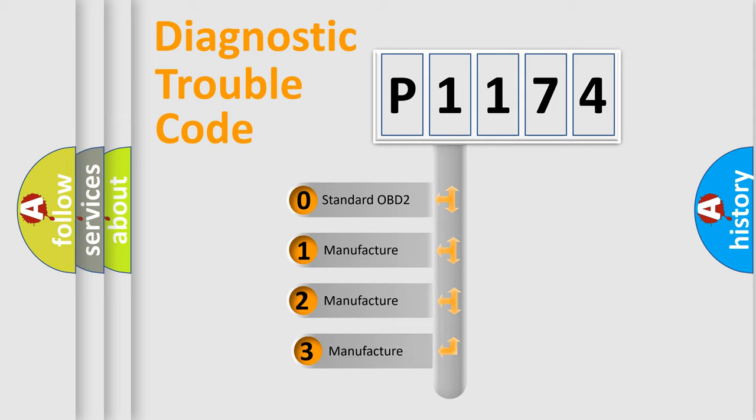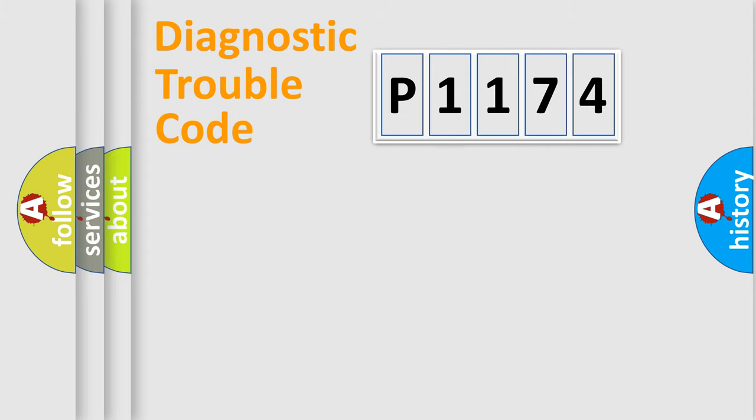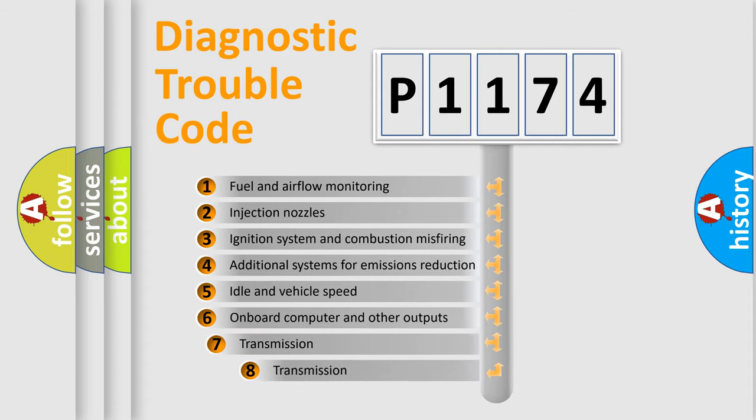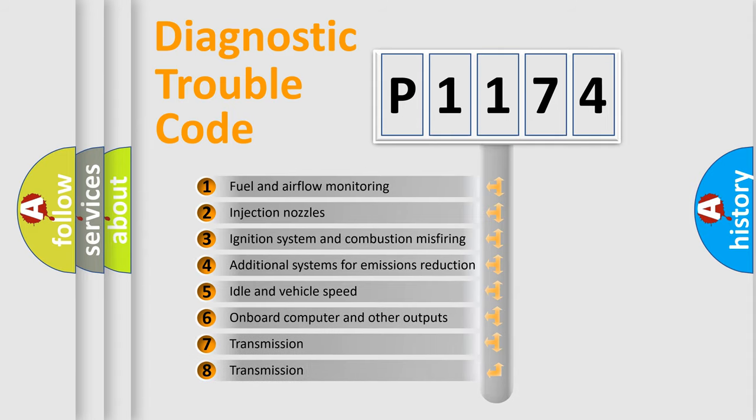If the second character is expressed as zero, it is a standardized error. In the case of numbers 1, 2, or 3, it is a manufacturer-specific expression of the car's error. The third character specifies a subset of errors.